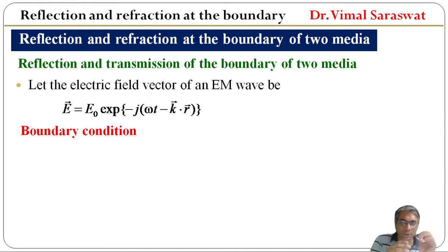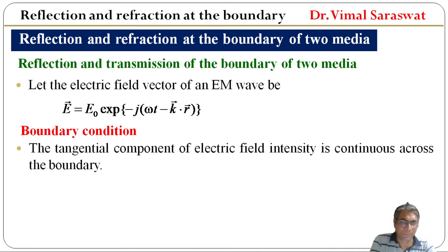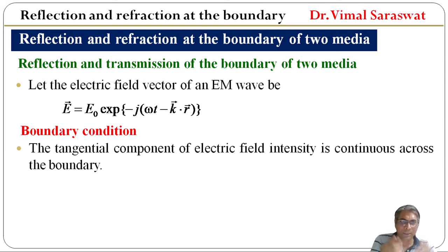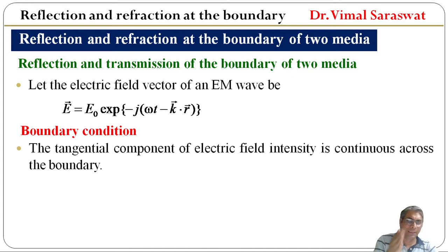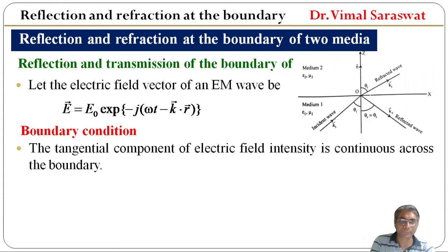Now, boundary conditions (seema pratibandh): the tangential component of electric field intensity is continuous across the boundary. So across the boundary, the tangential component of electric field intensity (vidyut kshetra ki tivrata ka sparsrekhiya ghatak) remains unchanged — it is continuous.